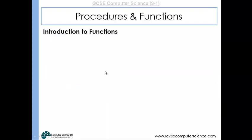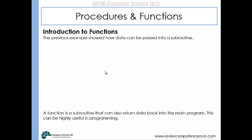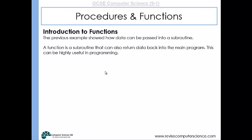So that was procedures. Procedures do not pass a value back to the main program — they can accept a value from it and work on that data, but they can't pass it back. Whereas a function can. We're now going to look at functions, which work like before but this time return values back to the main program. A function is a subroutine that also returns data back — and this can be really useful.